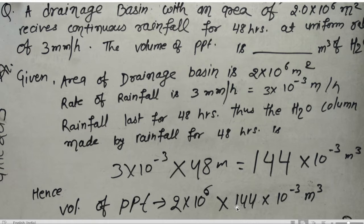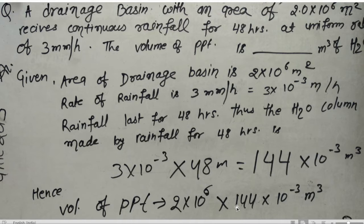The first question is: a drainage basin with an area of 2×10⁶ meter square receives a continuous rainfall for 48 hours at a uniform rate of 3 millimeter per hour. The volume of precipitation — that is, the volume of rain — is blank meter cube of water. This is from GATE 2015 paper. We have to find the total volume of precipitation of water.